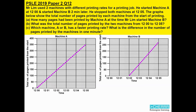ESL E 2019 paper 2, question 12. Mr. Lim used two machines with different printing rates for a printing job. He started machine A at 12 and started machine B two minutes later. He stopped both machines at 12.05. The graphs below show the total number of pages printed by each machine from the start of printing.